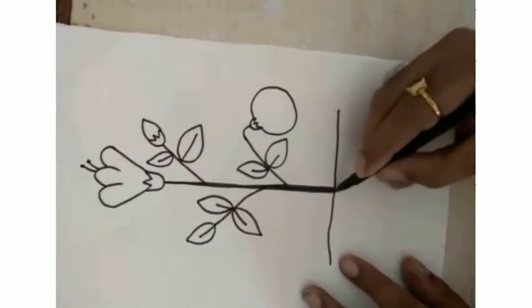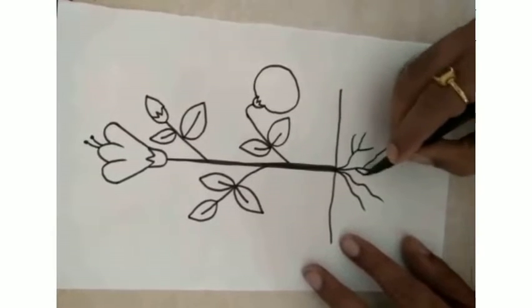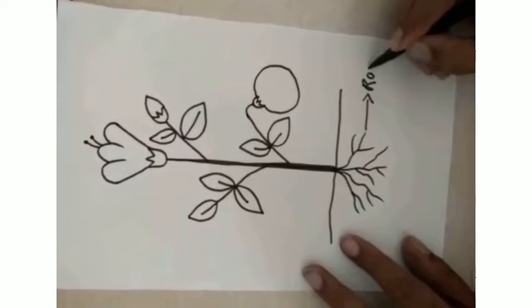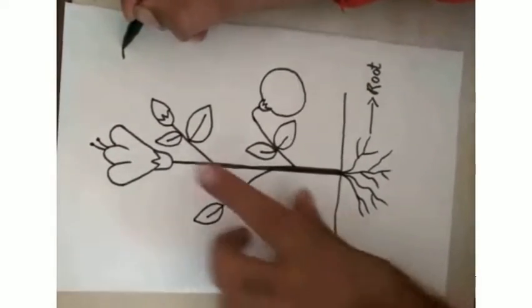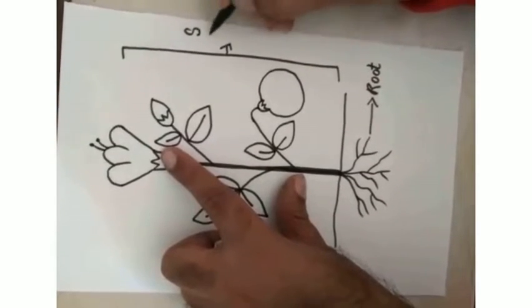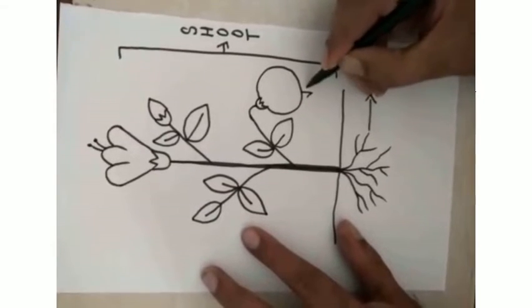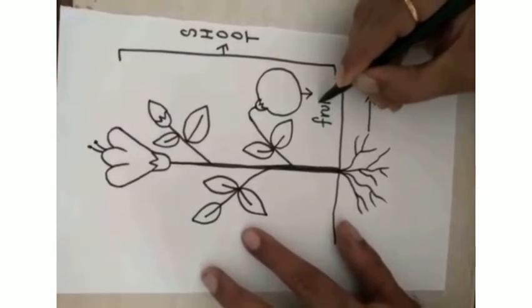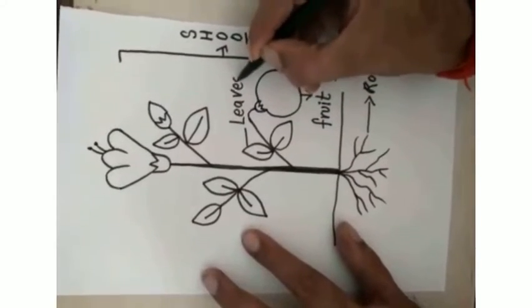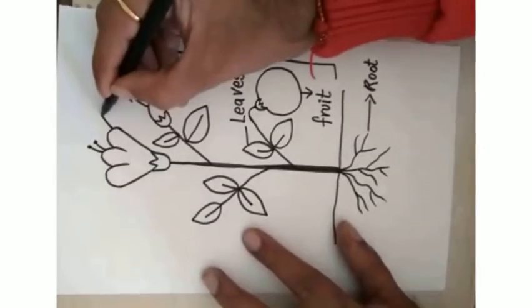You can turn it into dark tone. Here are the roots which are hiding down in the land. This is called a root. And this part is called as a shoot. This is called as a fruit. This is called as leaves. This is called as a bird.